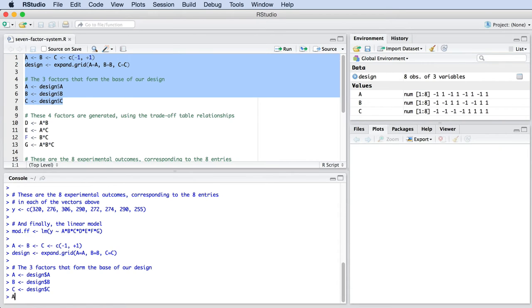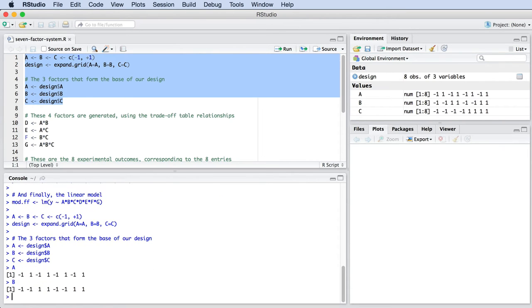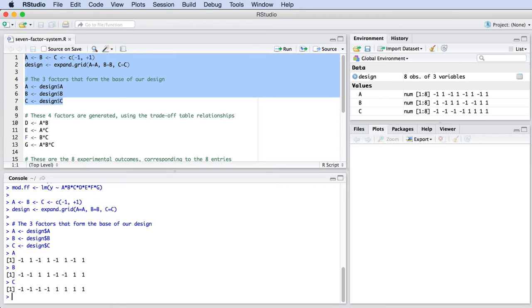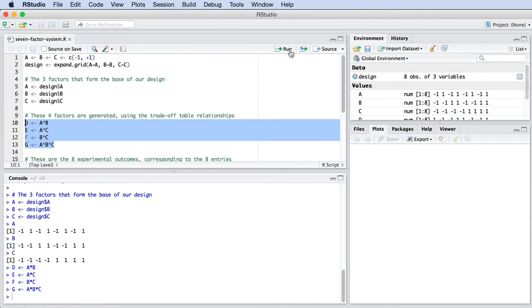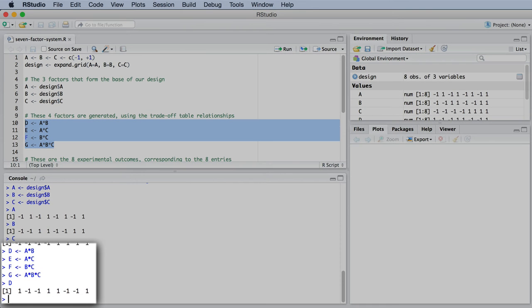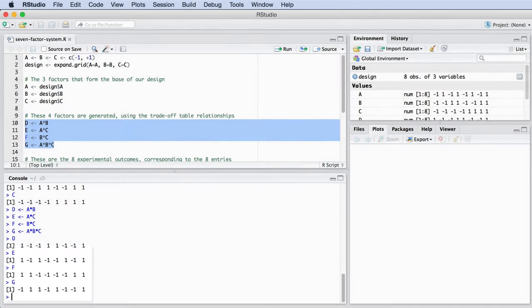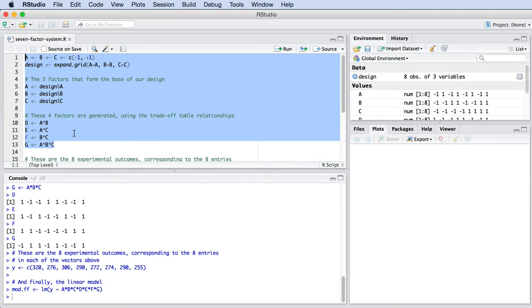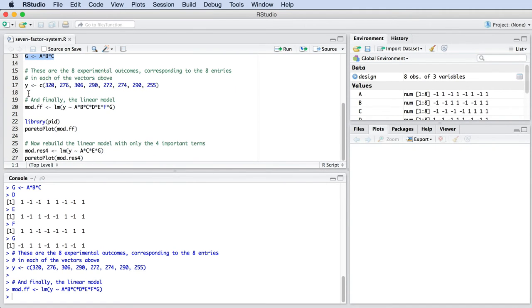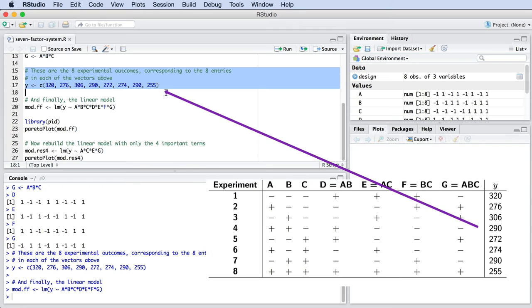Build the linear model in exactly the same way as you created the design on paper. First, define the three variables that you start with, A, B, and C. Next, generate the remaining four factors using the definitions from the tradeoff table. When you inspect these variables in the console, you should get exactly what you had on paper. Now, add the outcome values recorded for the eight experiments. I'm going to take them from the standard order table.